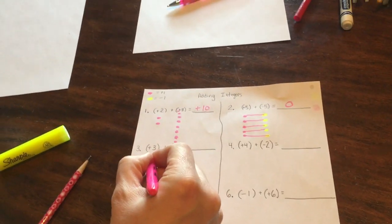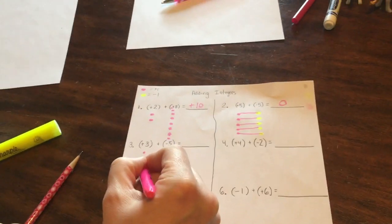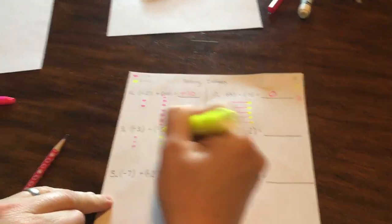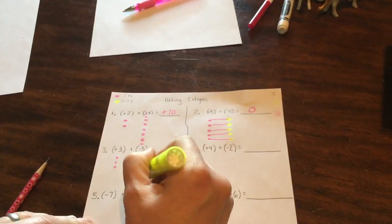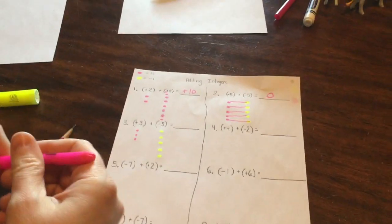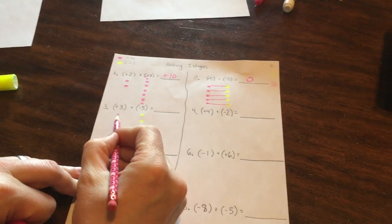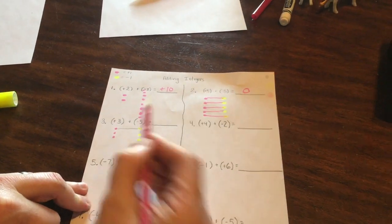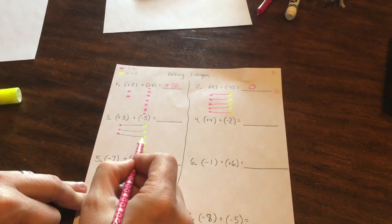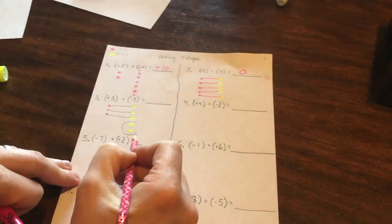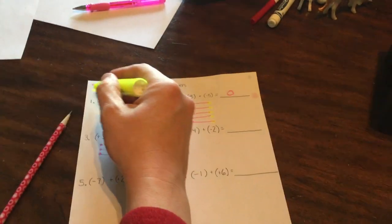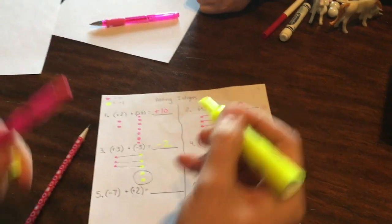So over here for this one, you got positive three. We've got negative five. So now we just look for the zero pairs. There's a positive and a negative make zero. Positive and another negative make zero. Positive and another made zero. And what's left over is negative two. So I've got two yellows. So I've got negative two.